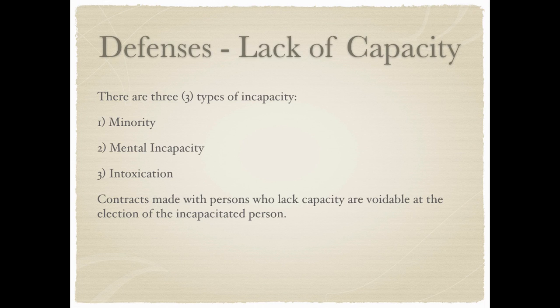First, we're going to start with lack of capacity. You want to make sure that both parties are of the age of majority, which is 18 years old, and that they have the mental capacity — they haven't been declared incompetent, they don't have Alzheimer's or dementia, or some physical or mental condition preventing them from signing documentation. Or are they intoxicated? If someone is drunk or high, they really should not be signing a contract.